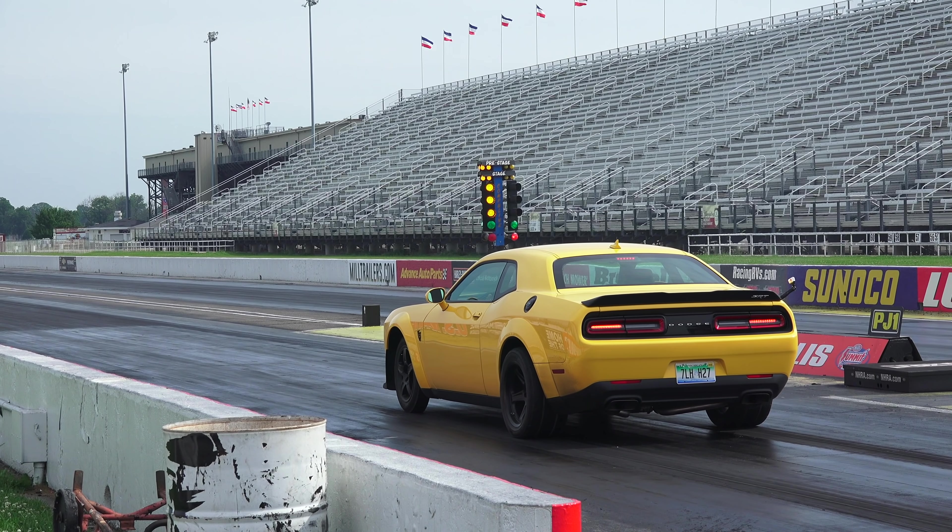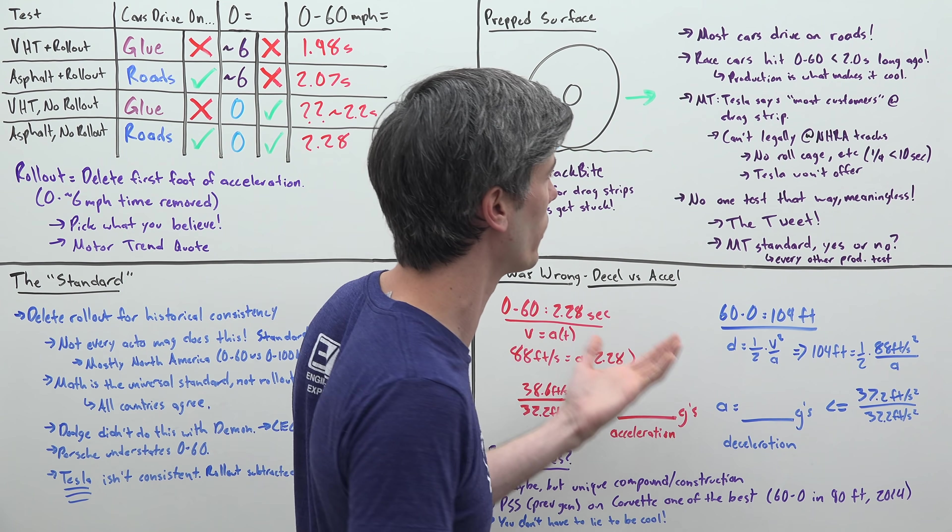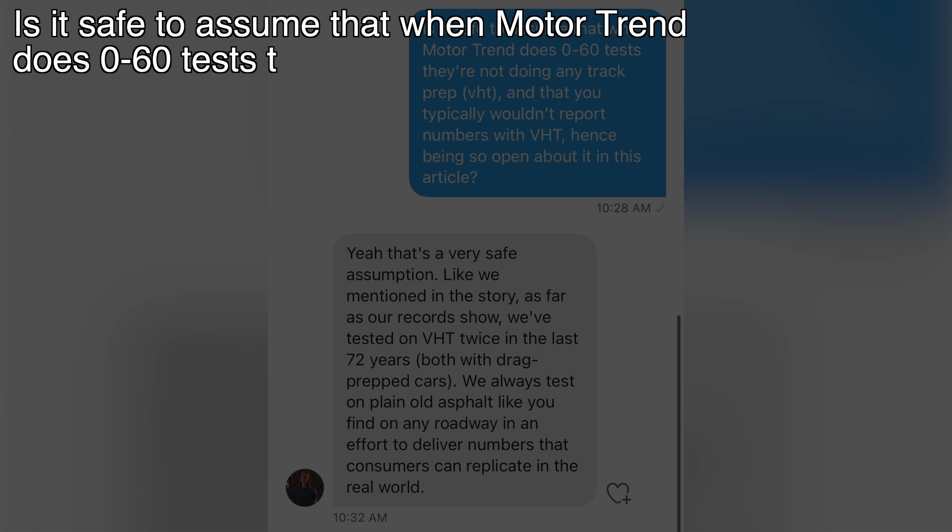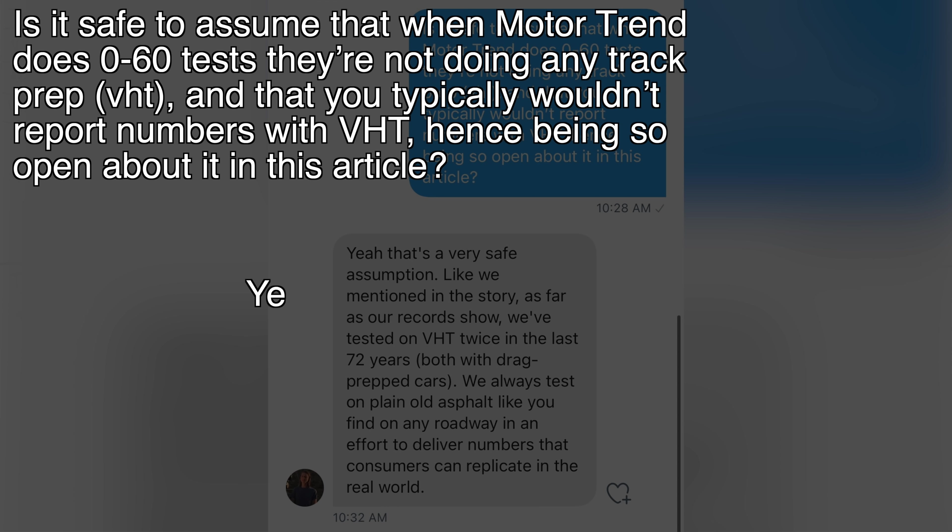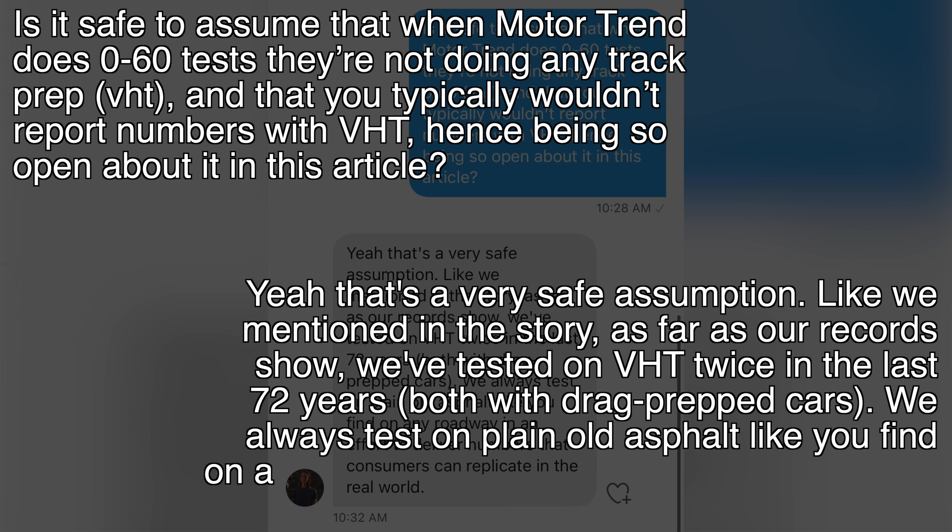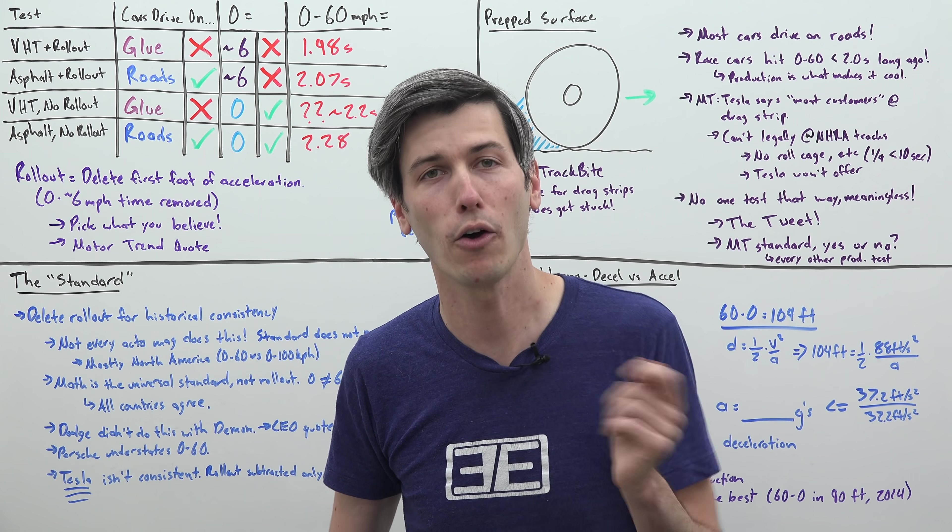One final point on this prepped surface debate: no one actually tests this way. I messaged the journalist who wrote this article for Motor Trend and asked if it's safe to assume that when Motor Trend does 0 to 60 tests, they're not doing any track prep VHT and typically wouldn't report numbers with VHT. Christian wrote back saying that's a very safe assumption. As far as their records show, they've tested on VHT twice in the last 72 years, both with drag prepped cars. They always test on plain old asphalt like you find on any roadway, in an effort to deliver numbers that consumers can replicate in the real world.